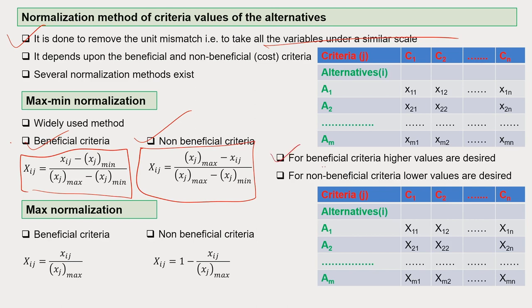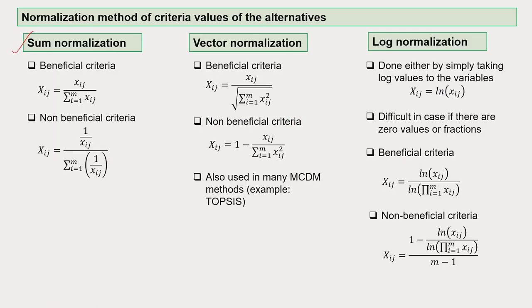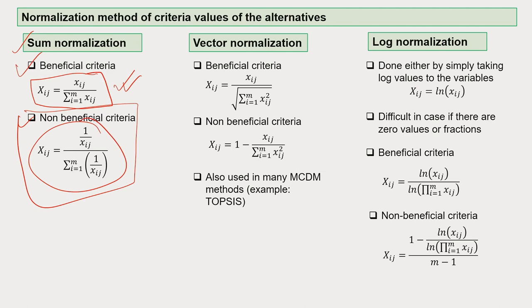For beneficial criteria, higher values are desired; for non-beneficial criteria, lower values are desired. In maximum normalization, for beneficial criteria you take the higher value as better, and for non-beneficial, lower is better. Sum normalization is another method where you add up values to calculate normalized scores — for beneficial criteria one formula applies, for non-beneficial another. This transcript of these lectures will also be provided to you.